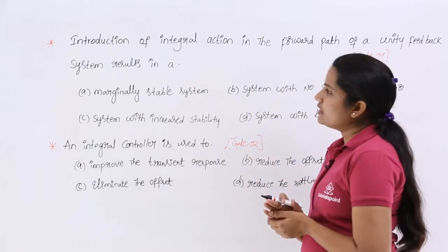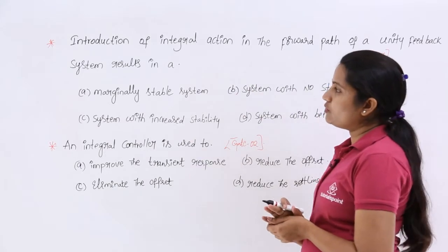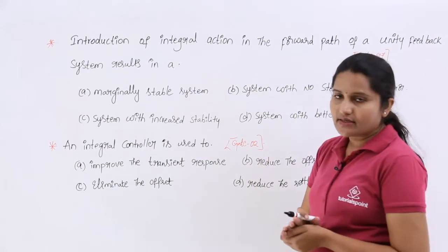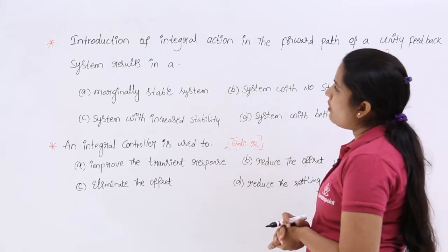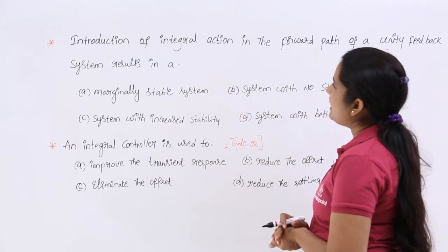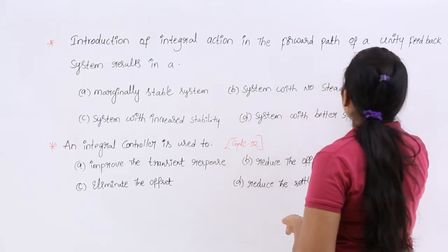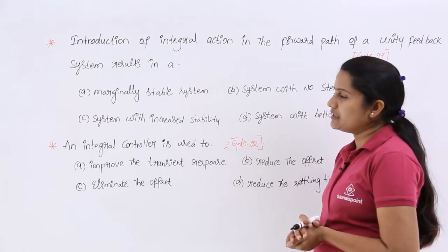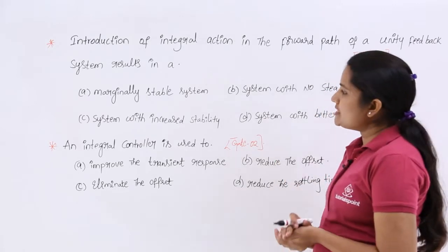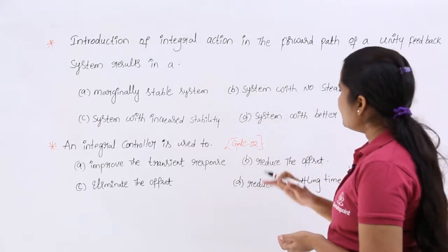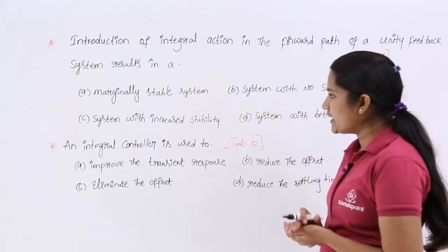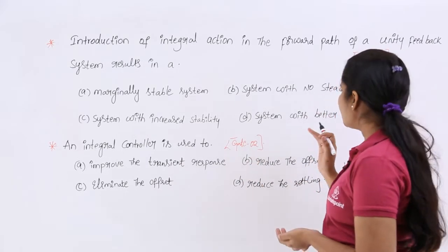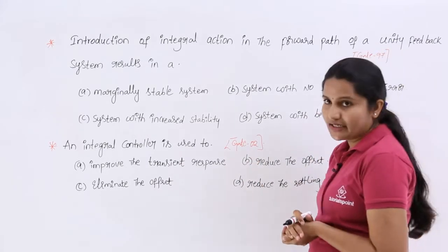Here you can see the first question from Gate 97: 'Introduction of integral action in the forward path of a unity feedback system results in' — options are: a marginally stable system, a system with no steady state error, a system with increased stability, or a system with better speed.